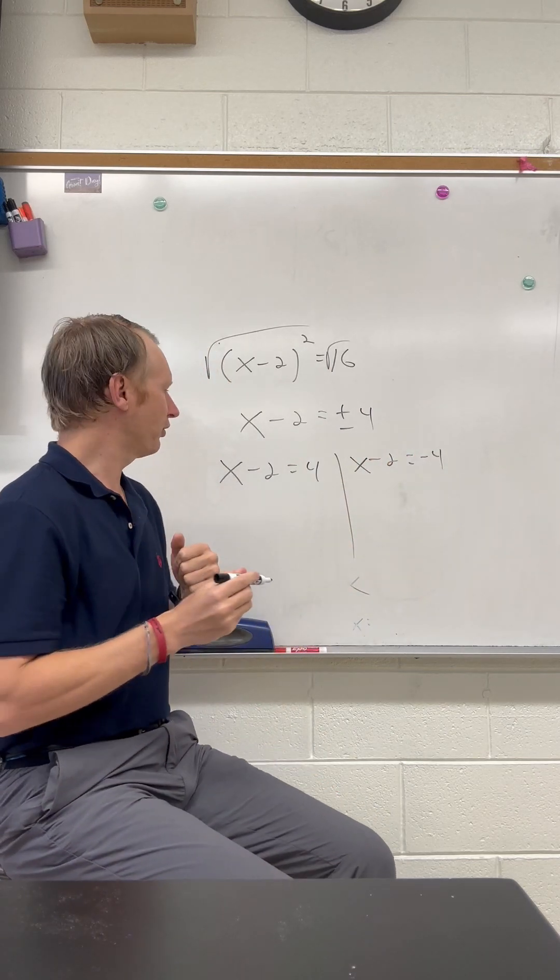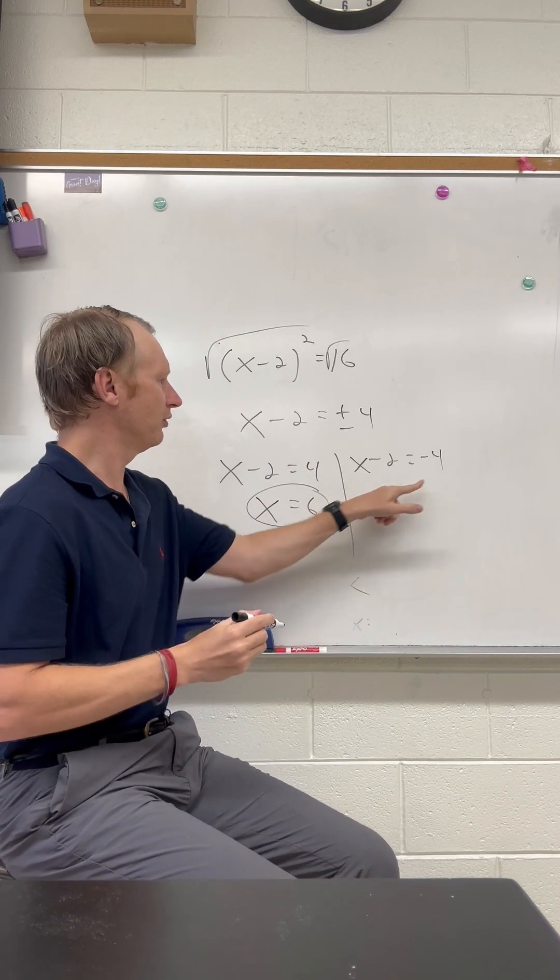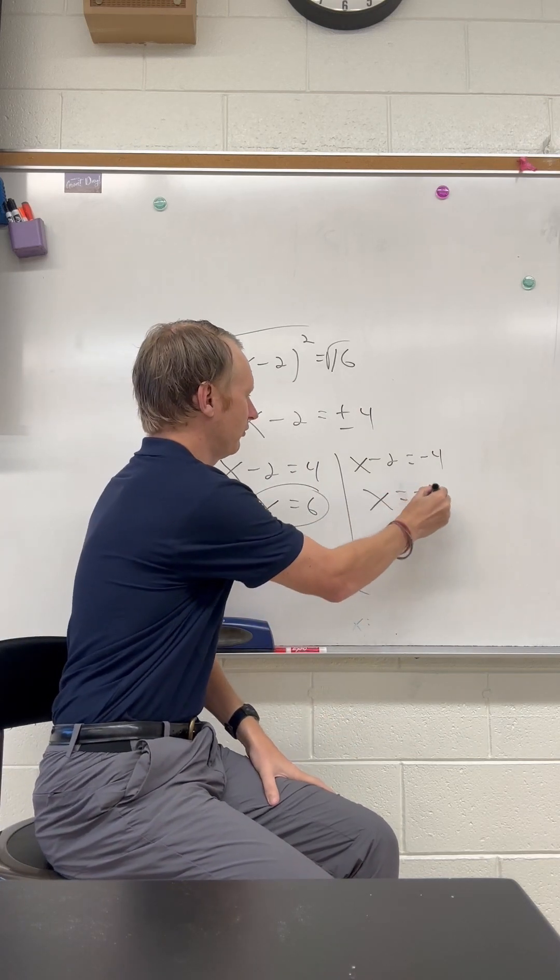And now we can solve both equations. Add 2, add 2. We get x equals 6. And then add 2 and add 2. We get x equals negative 2.